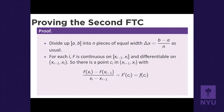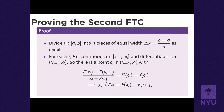This gives us f(cᵢ) × Δx = F(xᵢ) - F(xᵢ₋₁). We can find such a cᵢ by the Mean Value Theorem — the average rate of change of F over each subinterval equals F' at some point, and since F' = f, we get exactly the relation we want.